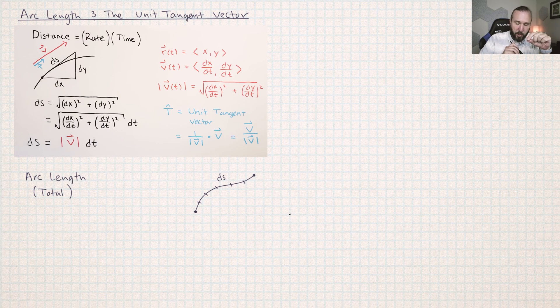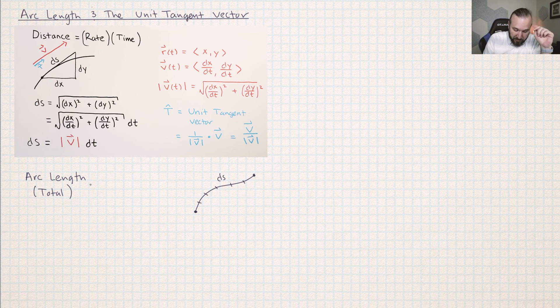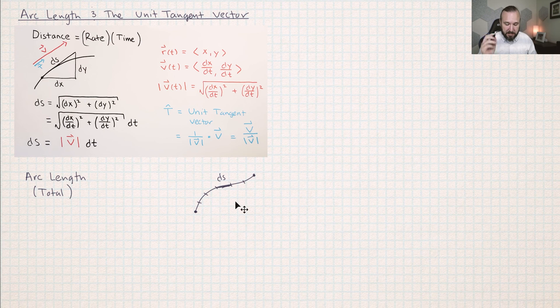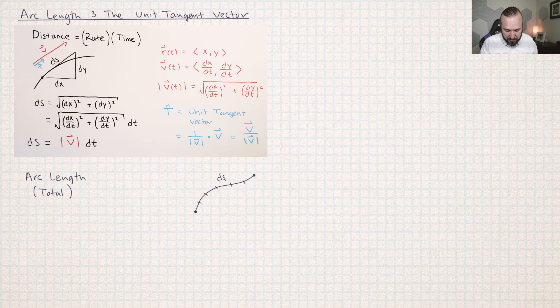Now, imagine that the particle was moving along a path and I chopped the path up into a bunch of pieces. Then I could approximate each one of those pieces using ds. And so then each one of these pieces is approximately ds. It's an approximation because the actual arc length is curved and we are using the tangent line in order to approximate the distance.